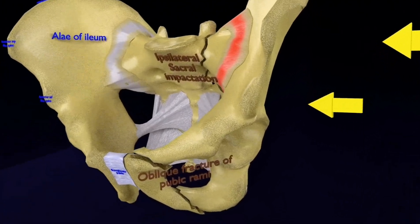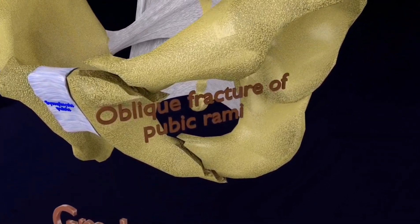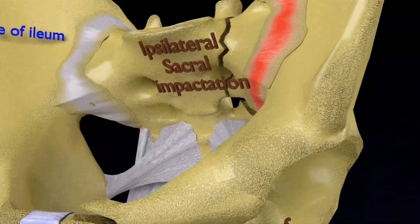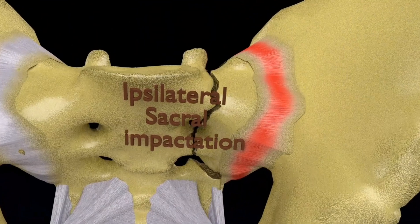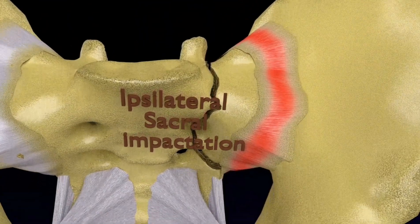Here, we can see the grade 1, which is stable. It has an oblique fracture of pubic rami and an ipsilateral anterior compression fracture of the sacral ala.